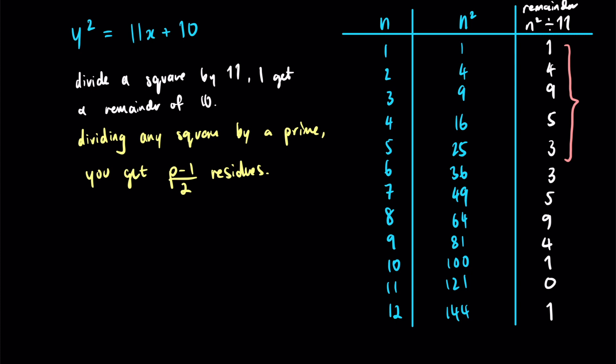So these are called, these remainders are called residues. So for example, if I divide a square by 13, I will get 6 numbers, numbers in the pattern. Okay, so here, over here we have 5, that is 11 take 1 divided by 2.